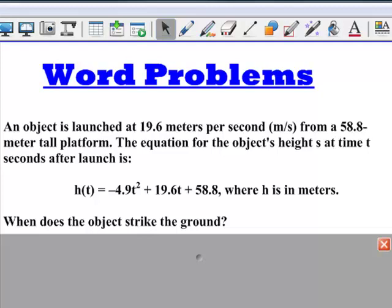An object is launched at 19.6 meters per second from a 58.8-meter tall platform. The equation for the object's height, s, at time t seconds after launch is: h(t) = -4.9t² + 19.6t + 58.8, where h is the height in meters.